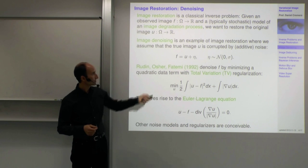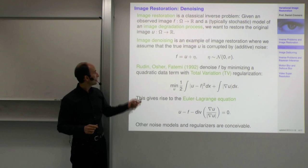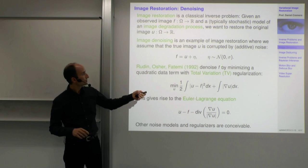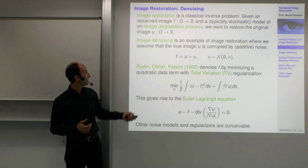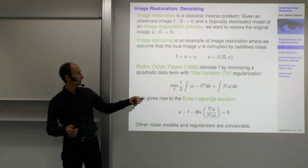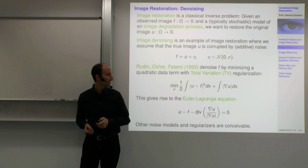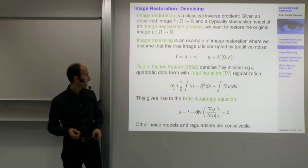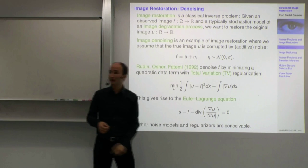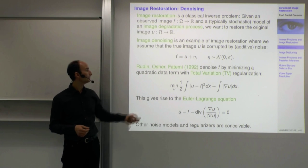The Gaussian noise model actually leads to a quadratic data term — yet another explanation for why people favour the quadratic data term, because it corresponds to a Gaussian noise model. Rudin, Osher, and Fatemi in 1992 proposed to denoise an observed image f by minimizing a cost function. As you can see, it has two terms, with a weighting parameter lambda in front of the regularizer.